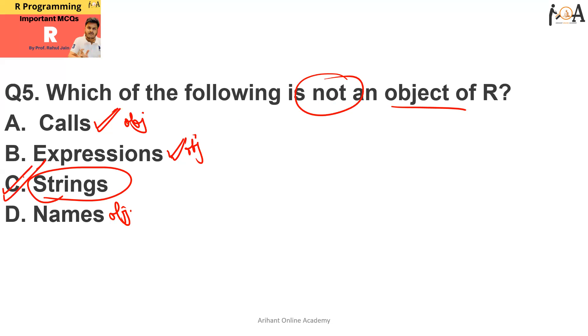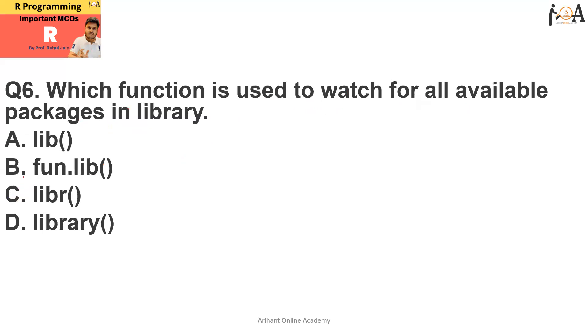Question number six is which function is used to watch for all available packages in the library? If we want to check out all the available packages that exist in the library, we can go for the command 'library'. This command is option D.